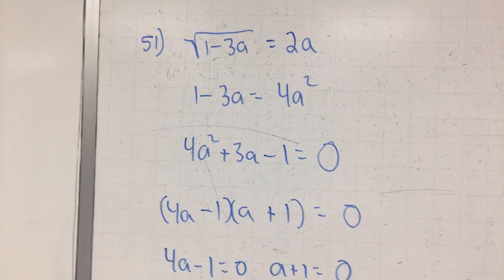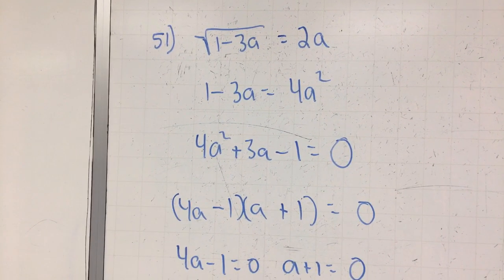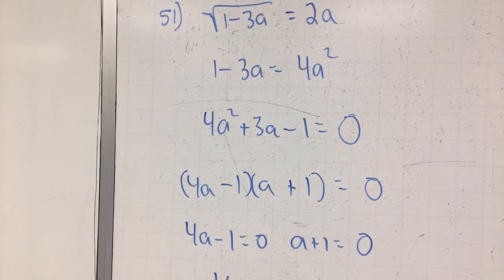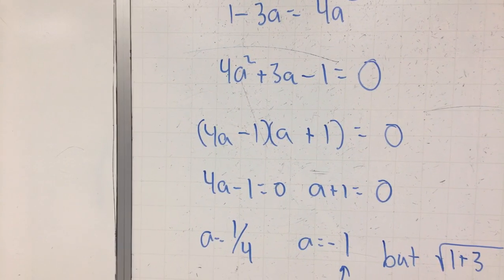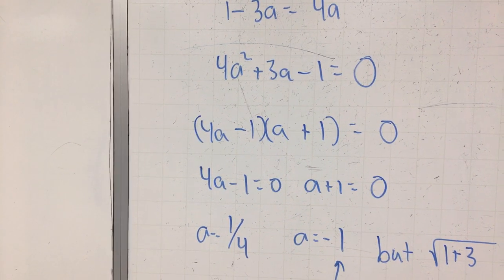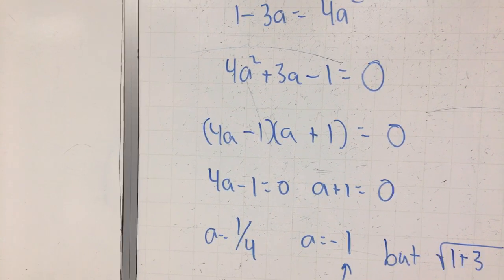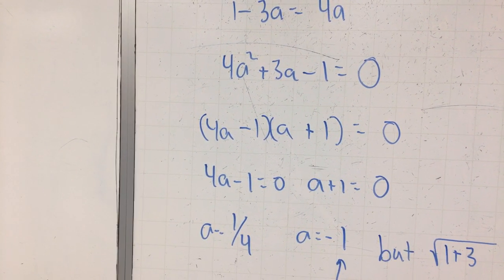I chose to factor this one. You could have used the quadratic. But anyway, it factors quite nicely. Now, set each individual factor equal to 0. And there's your two solutions to this. A is equal to 1 quarter or A is equal to negative 1. Now, it says check your answers. Now, look at that negative 1 right there. That's your huge clue right off the bat.